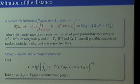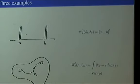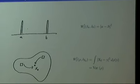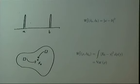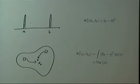Let me also write the definition in terms of expectations for those from a probability background. You take any pair of random variables X and Y such that X has law μ and Y has law μ̃, and you minimize the expectation of |X - Y|^p. When I take a pair of random variables, I am taking any possible joint distribution while fixing only the marginals. This generalizes exactly the previous variational scheme by choosing particular transference plans.